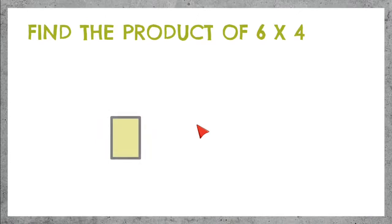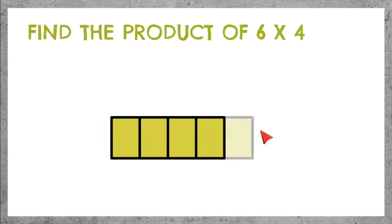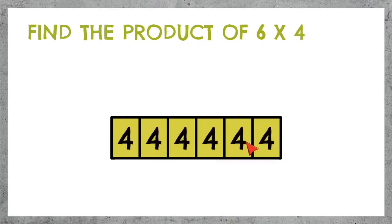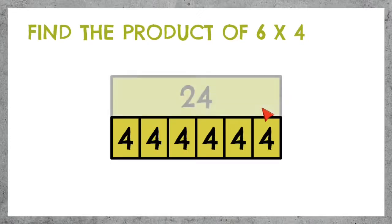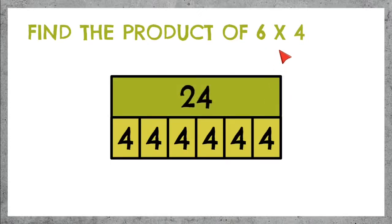6 times 4 means 6 parts of 4 — 1, 2, 3, 4, 5, 6. We need 4 in each of these parts. If we add 4 plus 4 plus 4 plus 4 plus 4 plus 4, we get 24. So we know that 6 times 4 equals 24.